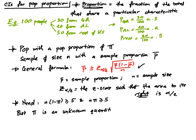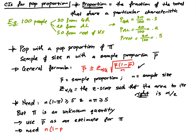So what do we do? Because π is an unknown quantity, we're going to use p-bar as an estimate for π. That means we need n times (1 minus p-bar) to be greater than or equal to 5, and n times p-bar to be greater than or equal to 5, for the general formula to work.